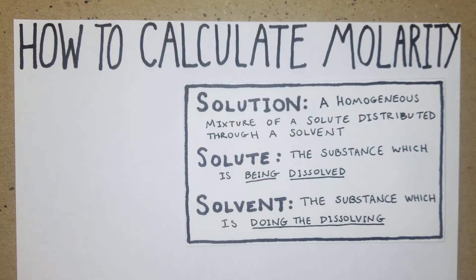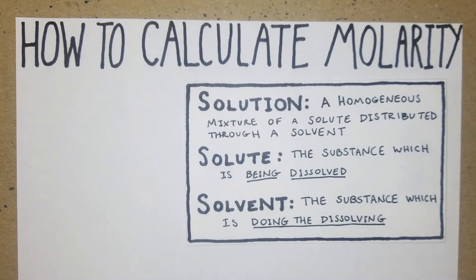A solution is just a homogeneous mixture of a solute distributed through a solvent. Essentially, a solute is the substance that's being dissolved and the solvent is what is doing the dissolving. The universal solvent, as they say, is water. Whenever you have a situation where you're adding some kind of powder or solid to water and dissolving it, water is going to be the solvent and the solute is going to be whatever else is there.